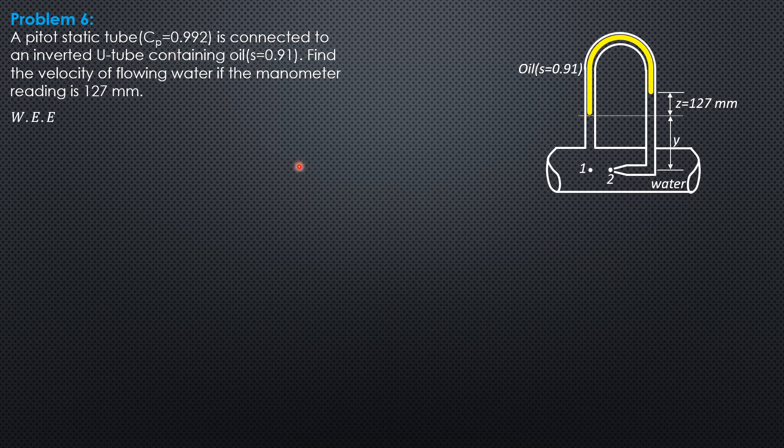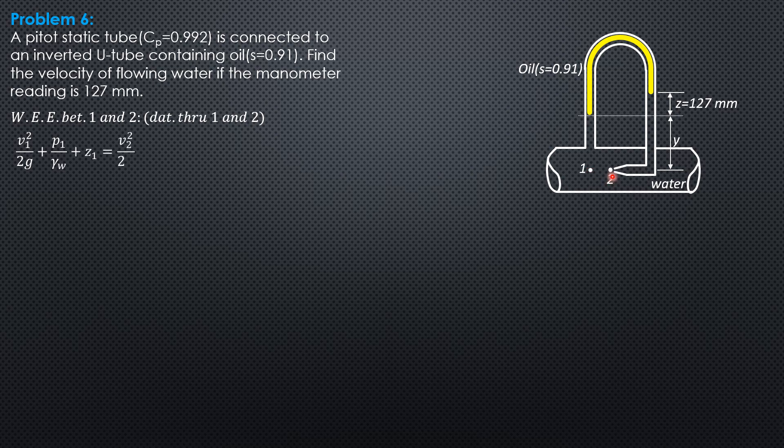We write the energy equation between points 1 and 2. We have velocity head at 1, pressure head at 1, and elevation head at 1 which is zero, equals velocity head at 2 which is zero because this is the stagnation point, plus pressure head at 2.